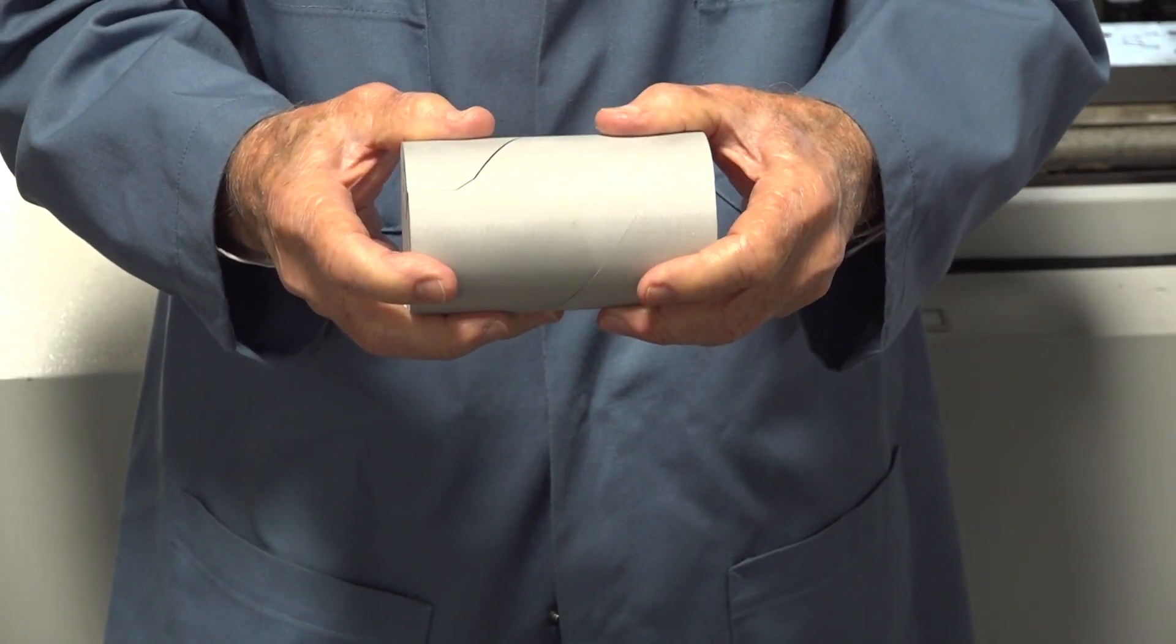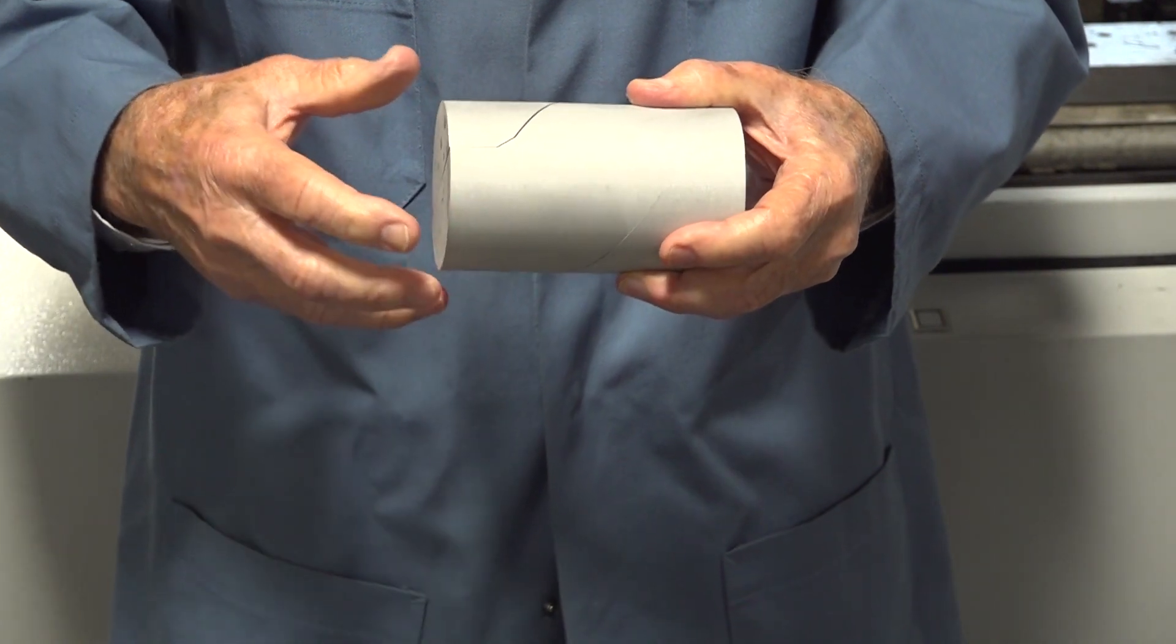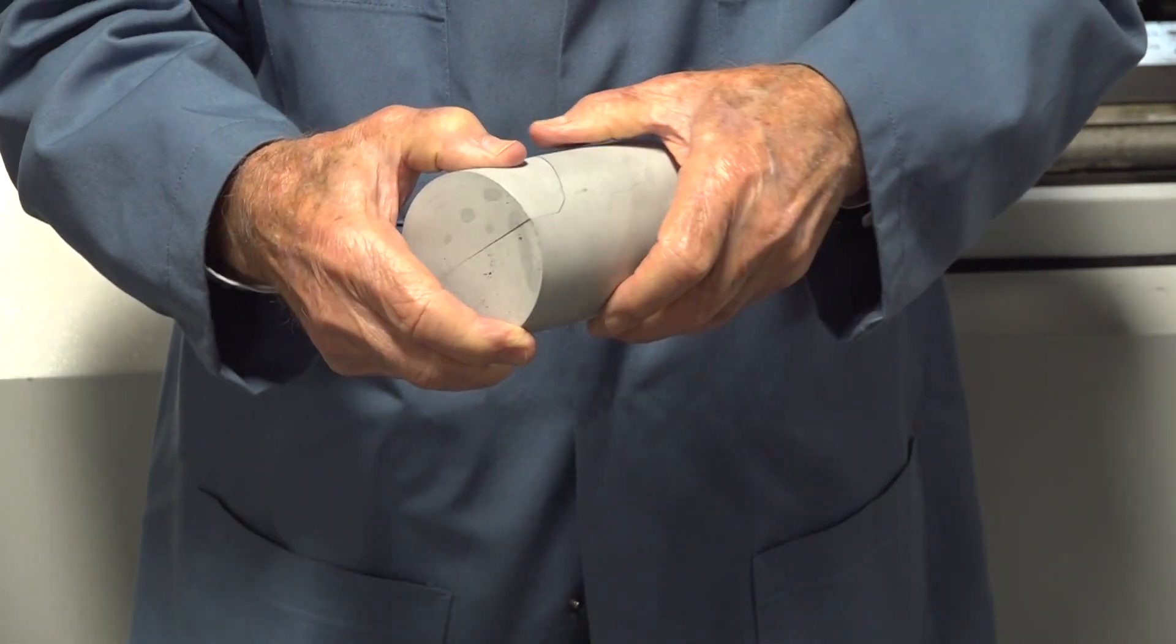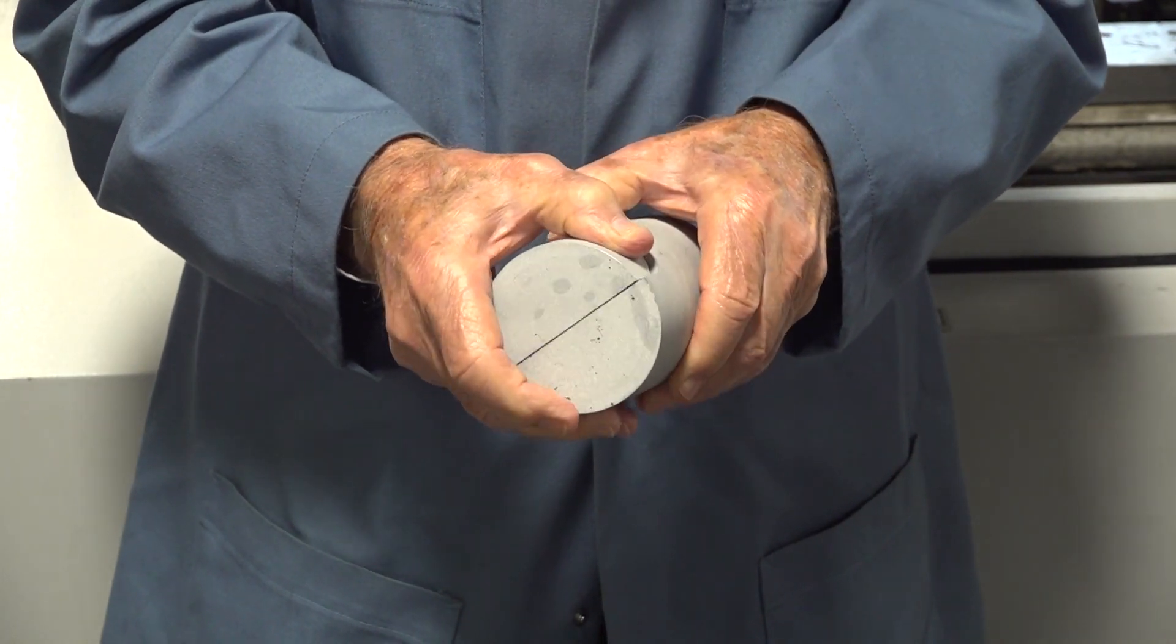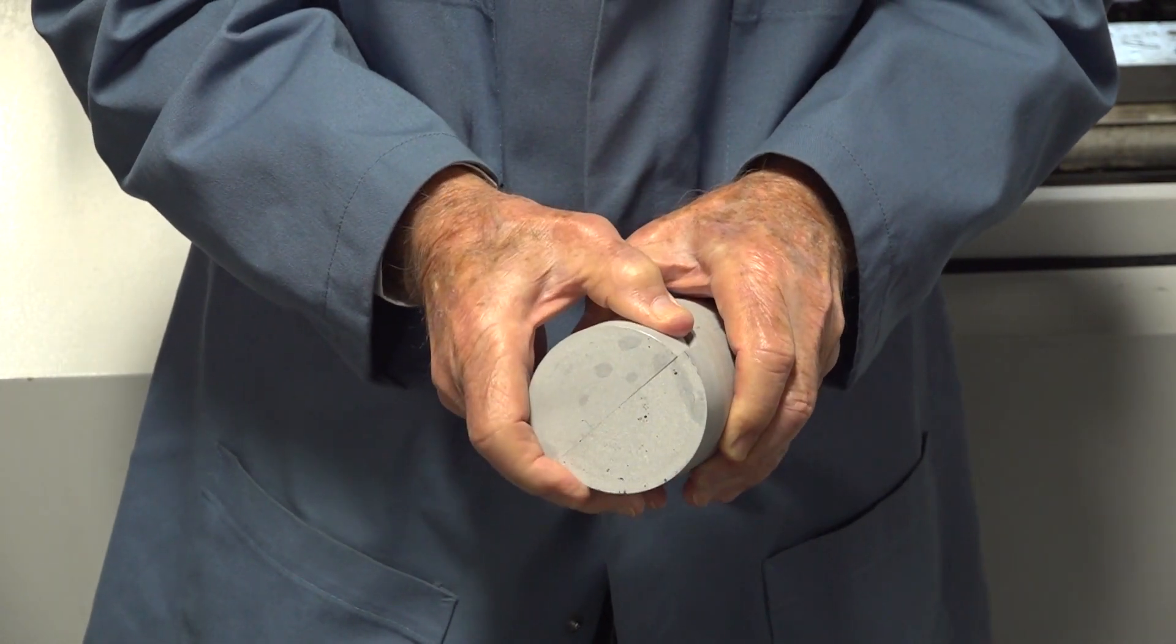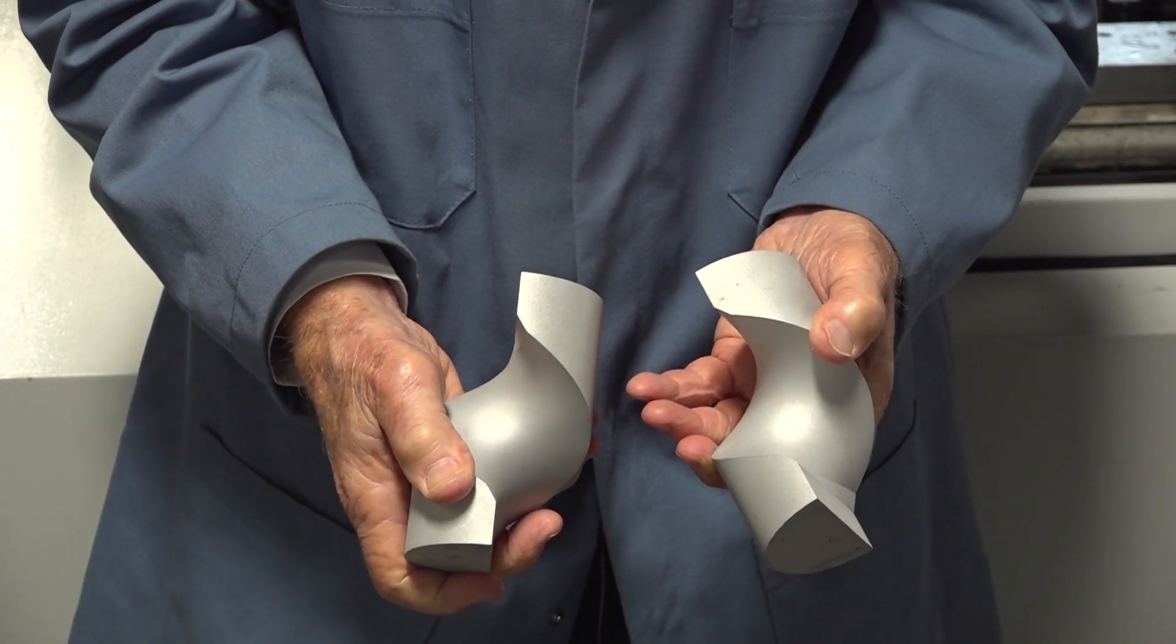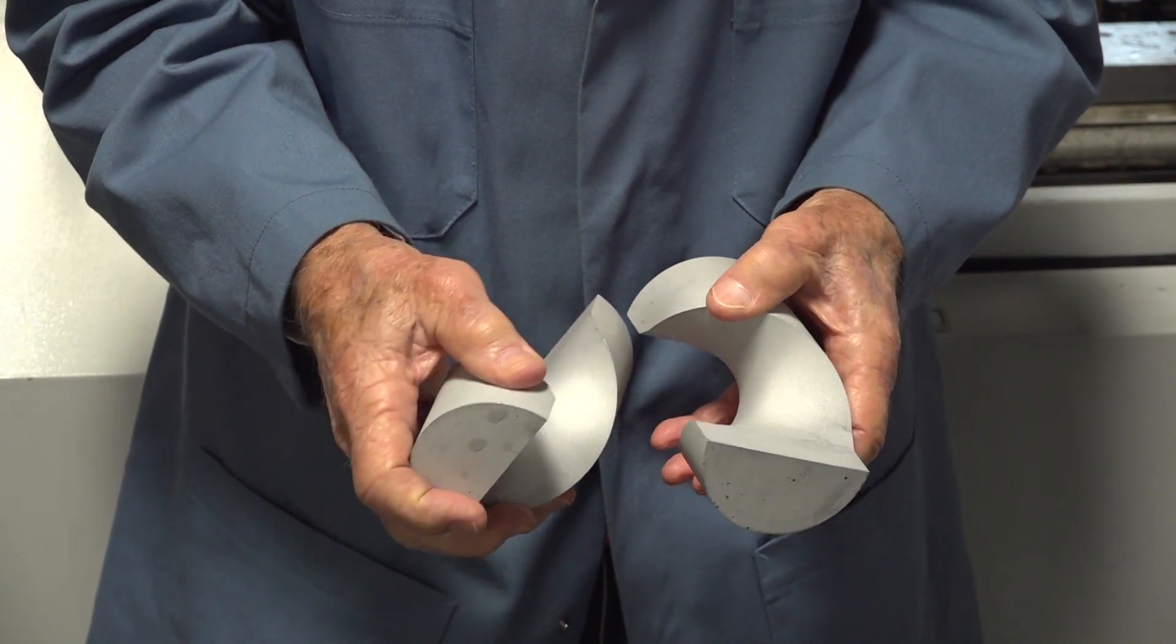For this part, the chuck rotated slowly as the machine went in the X direction. And here is the part that was made that way, as you can see, and that fits nicely together.